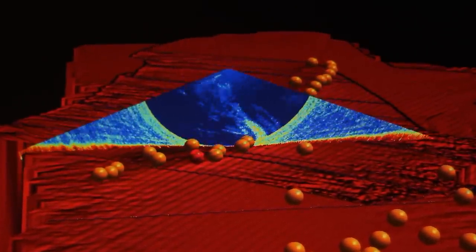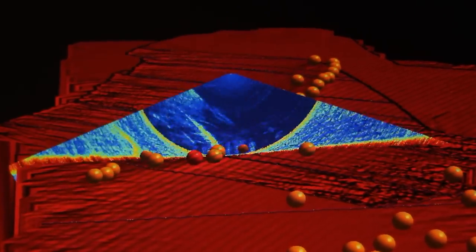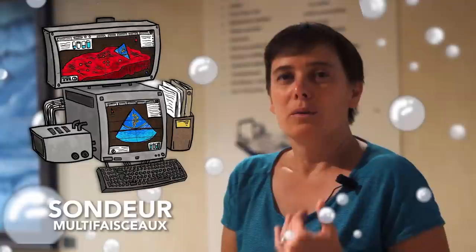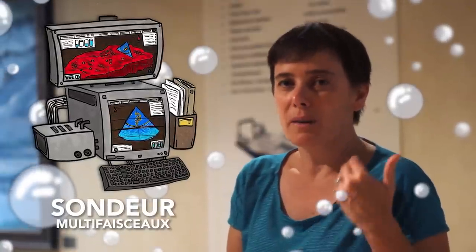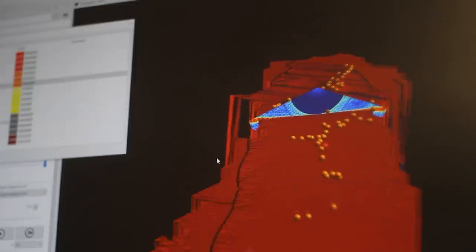Cependant, ces réponses ne pourront être obtenues qu'en croisant cette méthode d'observation avec d'autres instruments. Le sondeur multifaisseau lui seul, même si c'est un outil crucial, ne nous permet pas de déterminer la nature des fluides. Pour cela, on a besoin de passer au prélèvement, une fois qu'on a détecté ces sorties et identifié leur localisation en fond de mer.